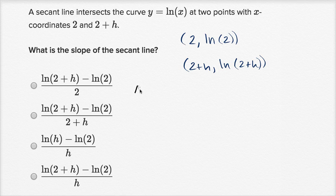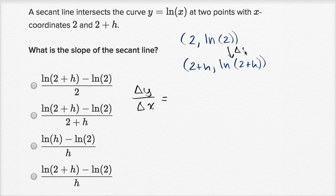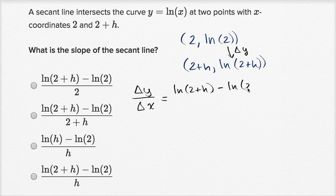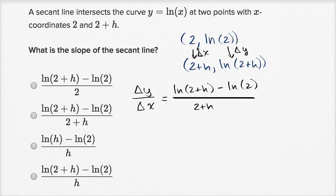We can remind ourselves that slope is just change in y over change in x. If we view the second point as our endpoint, our change in y going from ln(2) to ln(2+h) is: natural log of two plus h minus natural log of two. And our change in x is two plus h minus two, and of course these twos cancel out, leaving h. So it looks like we have a choice that directly matches: natural log of two plus h minus natural log of two, all over h.